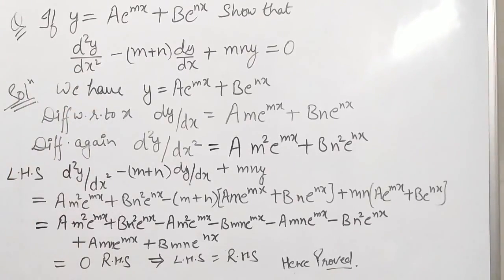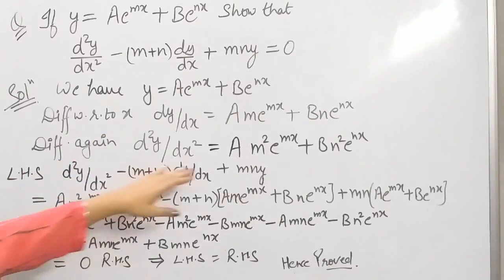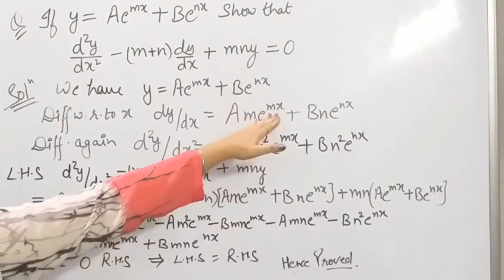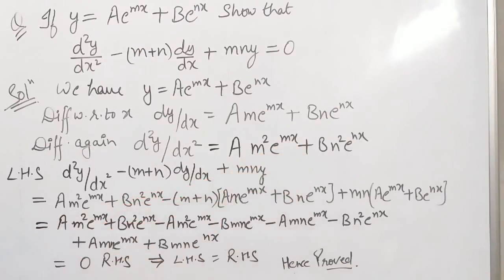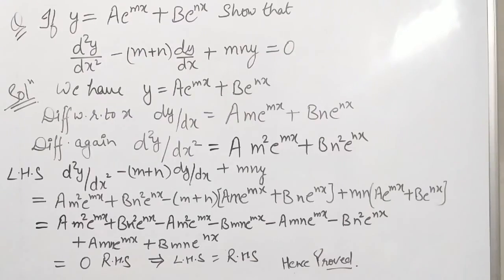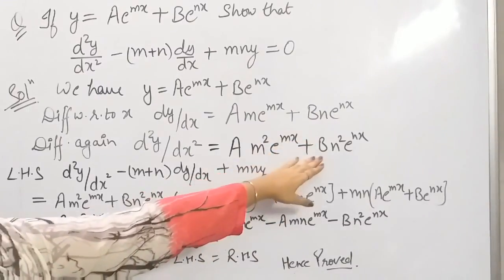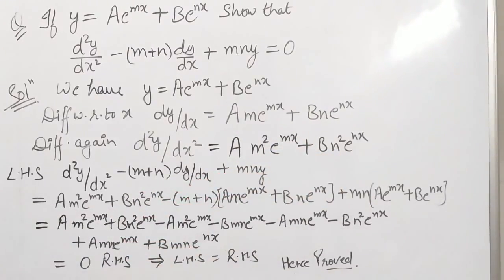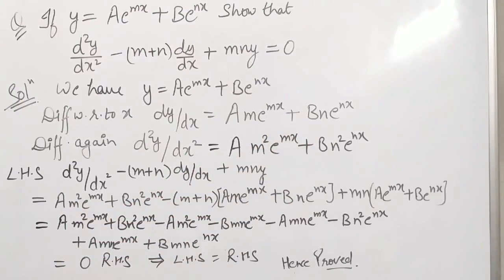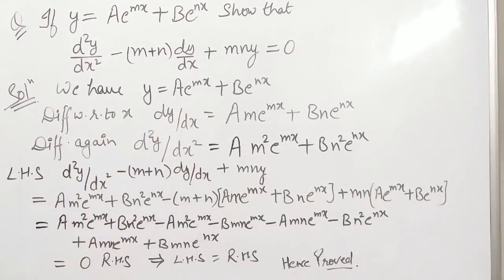To find d²y/dx², we differentiate dy/dx again with respect to x. Differentiating a·m·e^(mx) gives a·m²·e^(mx), and differentiating b·n·e^(nx) gives b·n²·e^(nx). So d²y/dx² equals am²e^(mx) plus bn²e^(nx). We now have the values of dy/dx and d²y/dx².